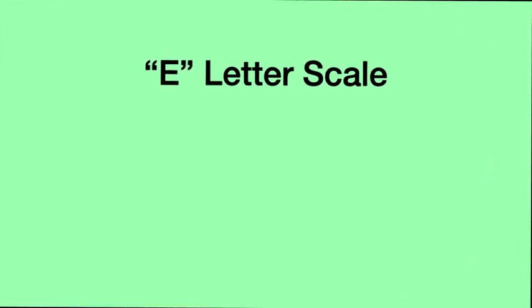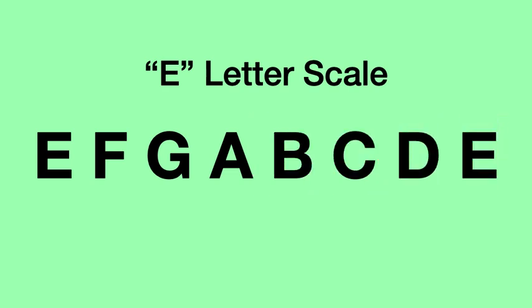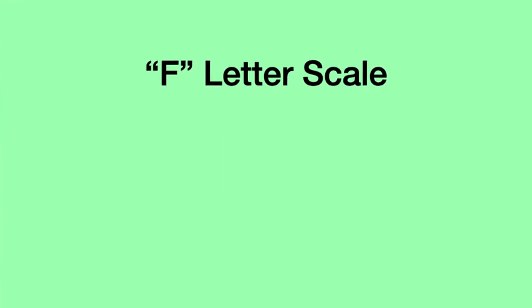Are you starting to get the hang of it? The E letter scale. E, F, G, A, B, C, D, E. Always eight letters, always in the same order, always starting and ending on the letter we started with.